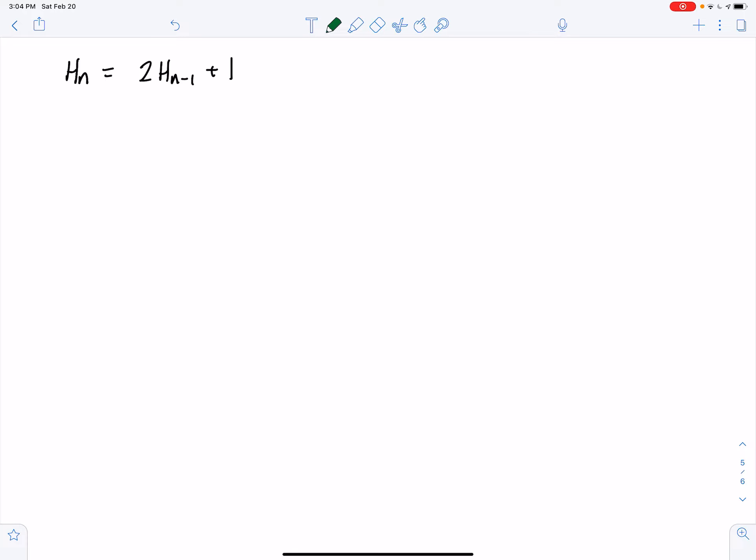We're going to take another look at the Hanoi sequence, but this time solving it by the iterative approach. A key thing to remember is that h_n equals 2h_{n-1} plus 1.